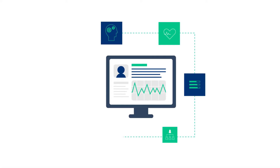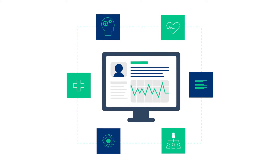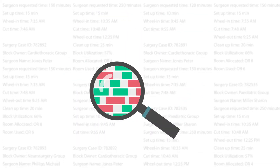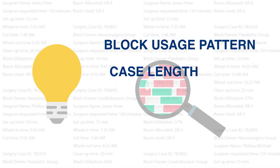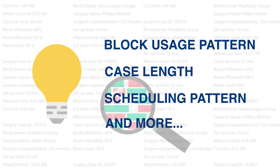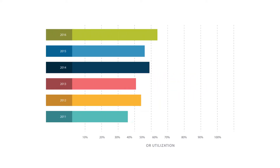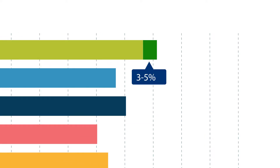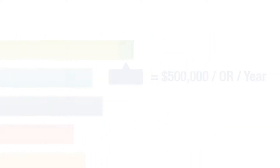The good news is that hospitals have made significant investments in EHR, business intelligence, and other tools. These tools have a lot of untapped historical data to drive forward-looking block allocation, staffing, and other key operational decisions. Given that every minute of OR time can be worth hundreds of dollars in revenue, even a small improvement — as little as three to five percent — can increase revenue by half a million dollars per OR per year.